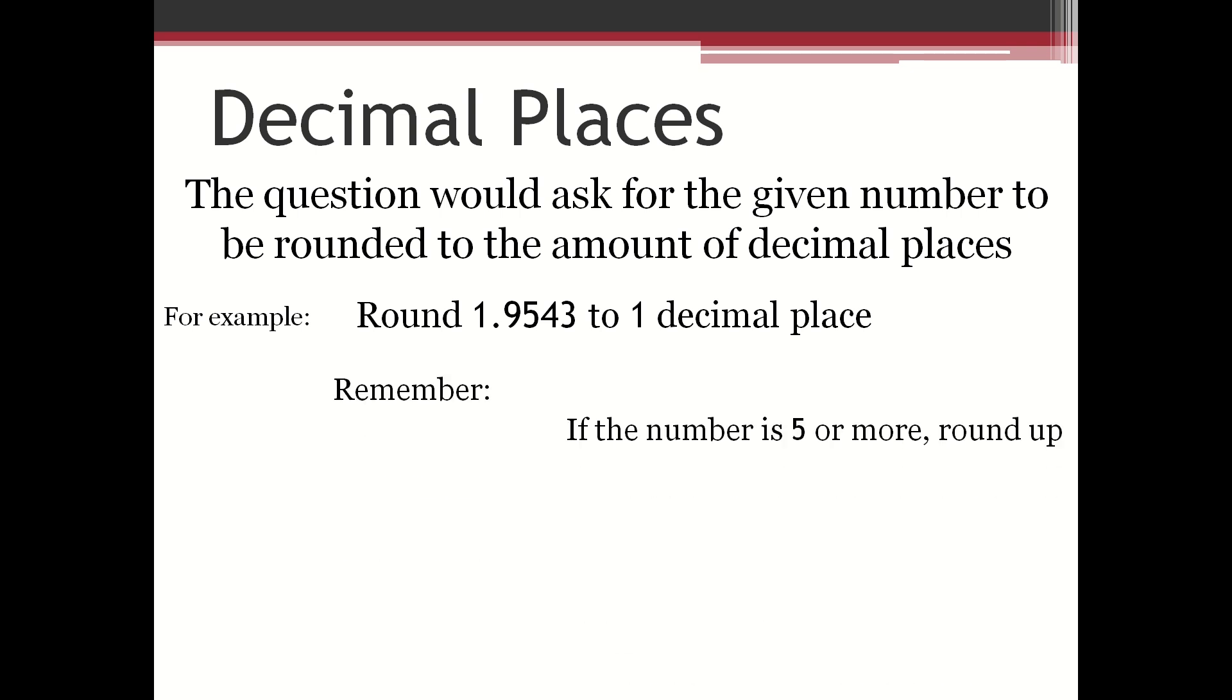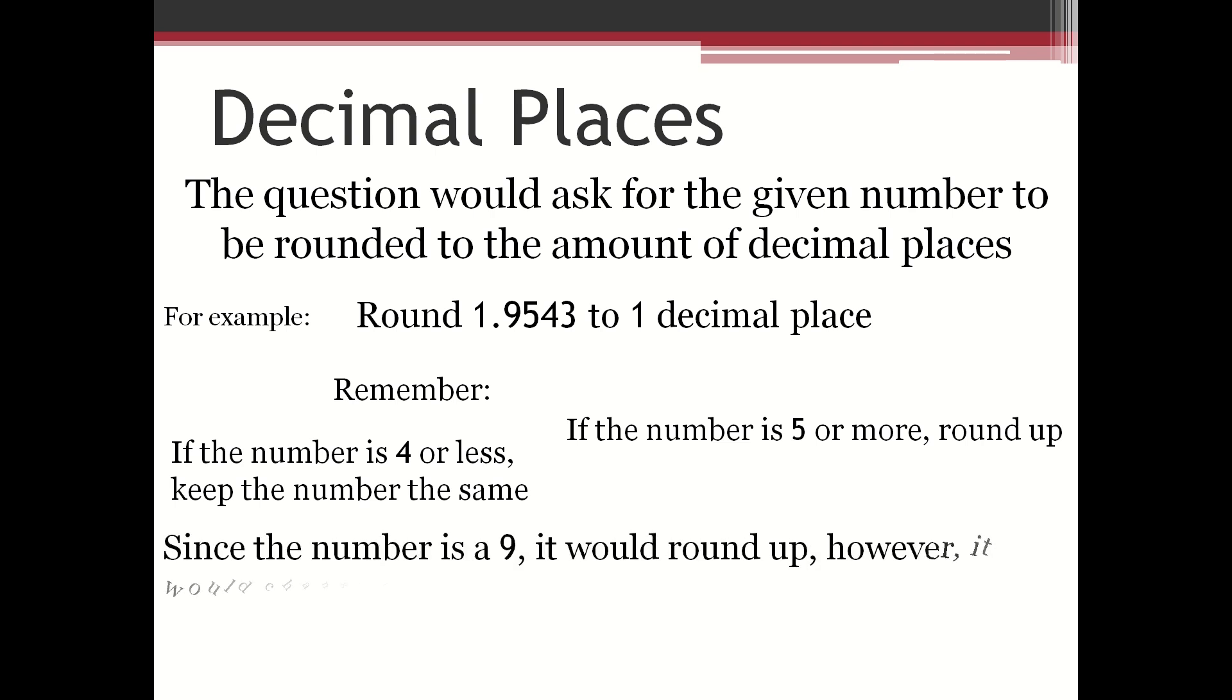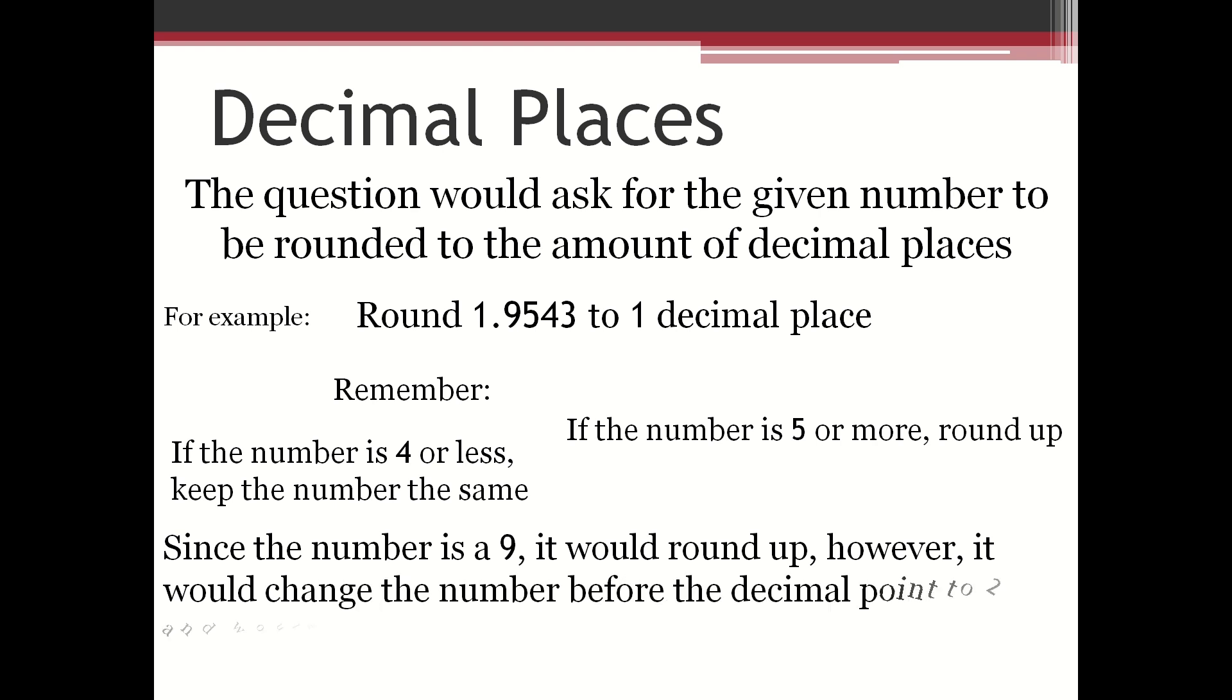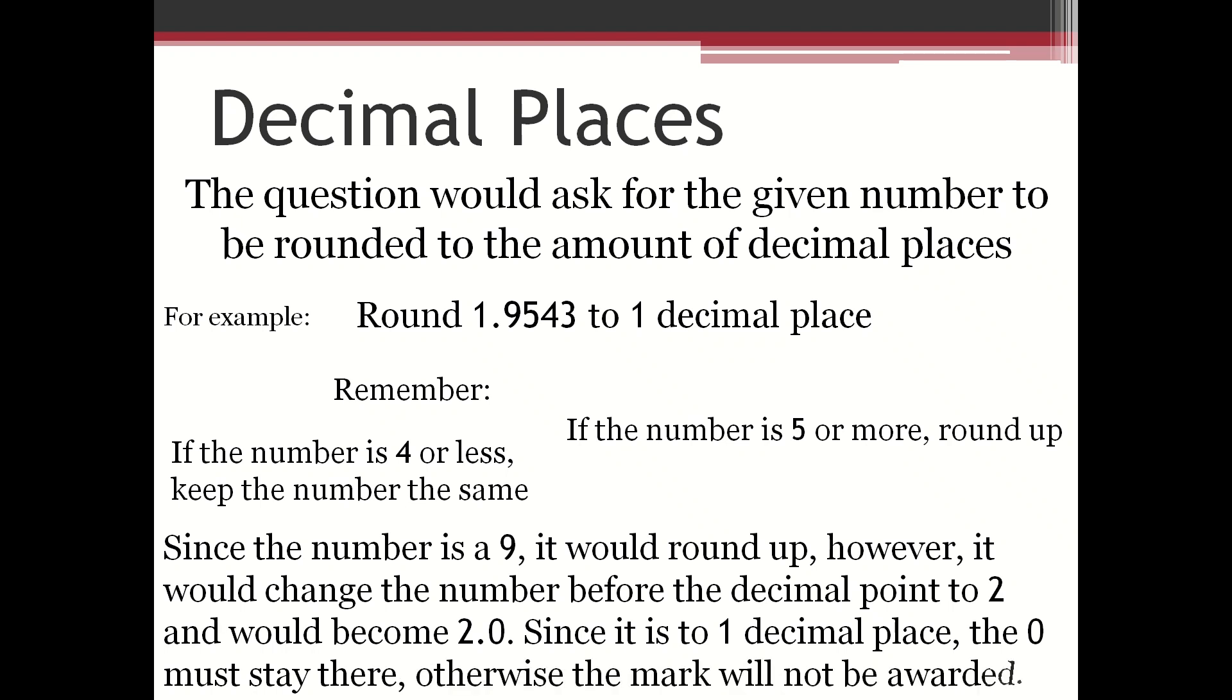Remember, if the number is five or more, round up. If the number is four or less, keep the number the same. Since the number is a nine, it would round up. However, it would change the number before the decimal point to two and would become 2.0.